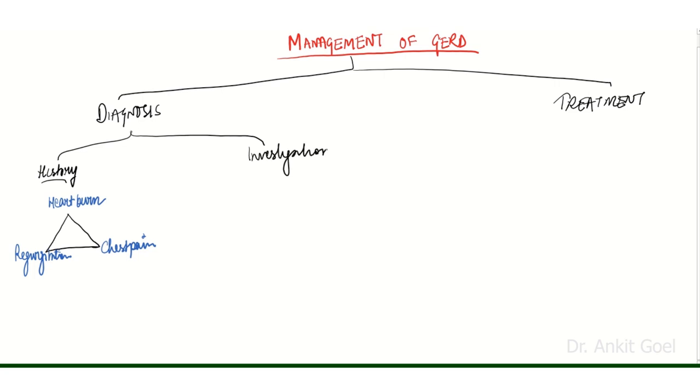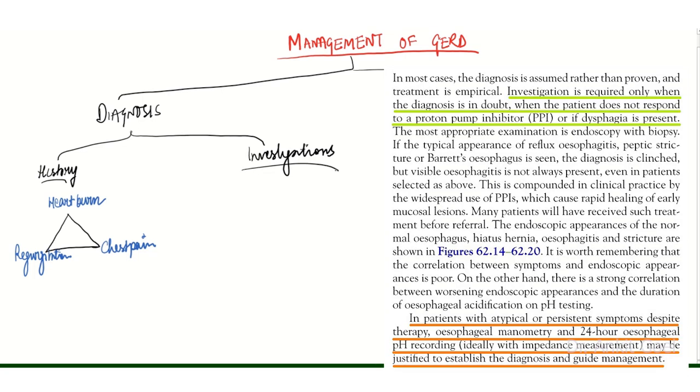According to Bailey and Love, investigations are only required when the diagnosis is in doubt, when the patient does not respond to initial medical treatment, or if the patient is having dysphagia. Upper GI endoscopy is the first line of investigation.